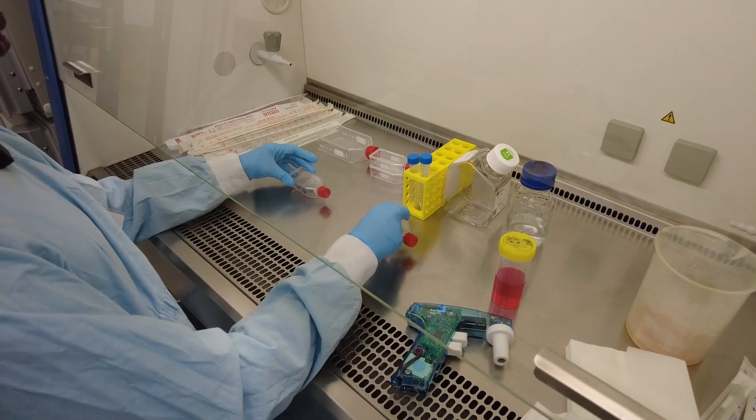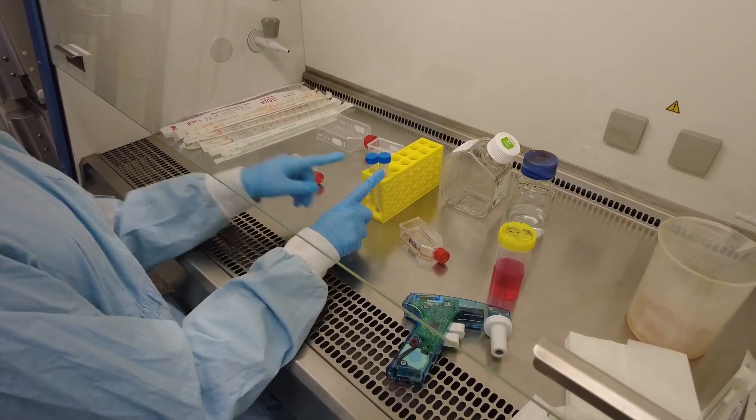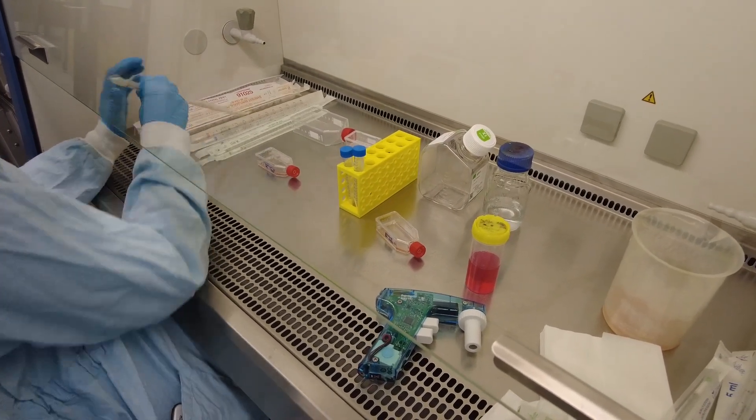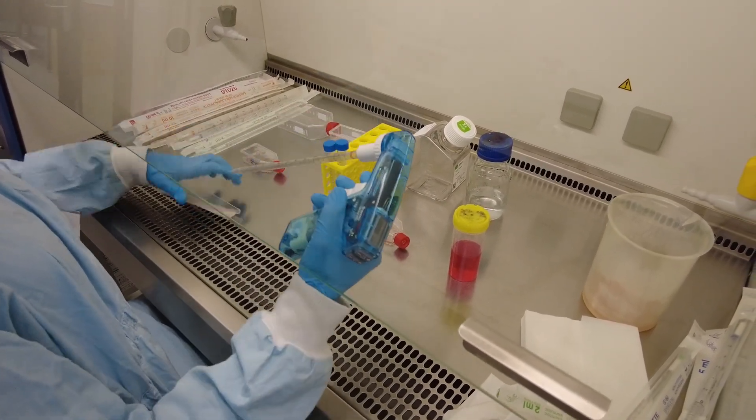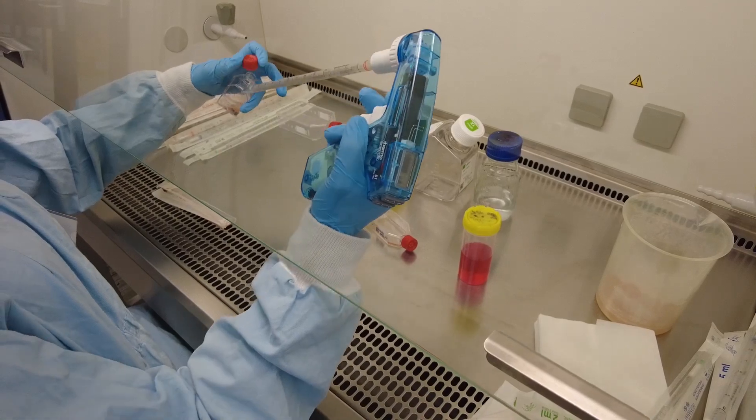Now each flask is going to go into an individual centrifuge tube. And then we're going to centrifuge it for about 10 minutes so we can get the cell pellet.